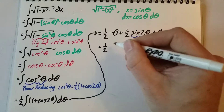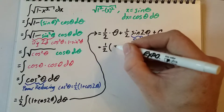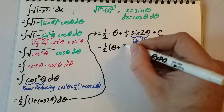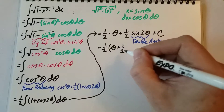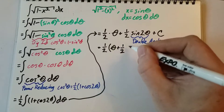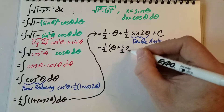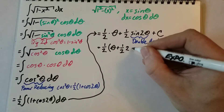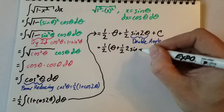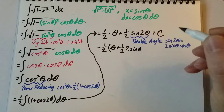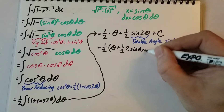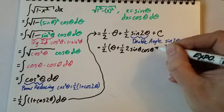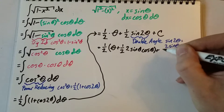So that now gives us one half times theta, plus one half times 2 sine theta cosine theta, plus c.